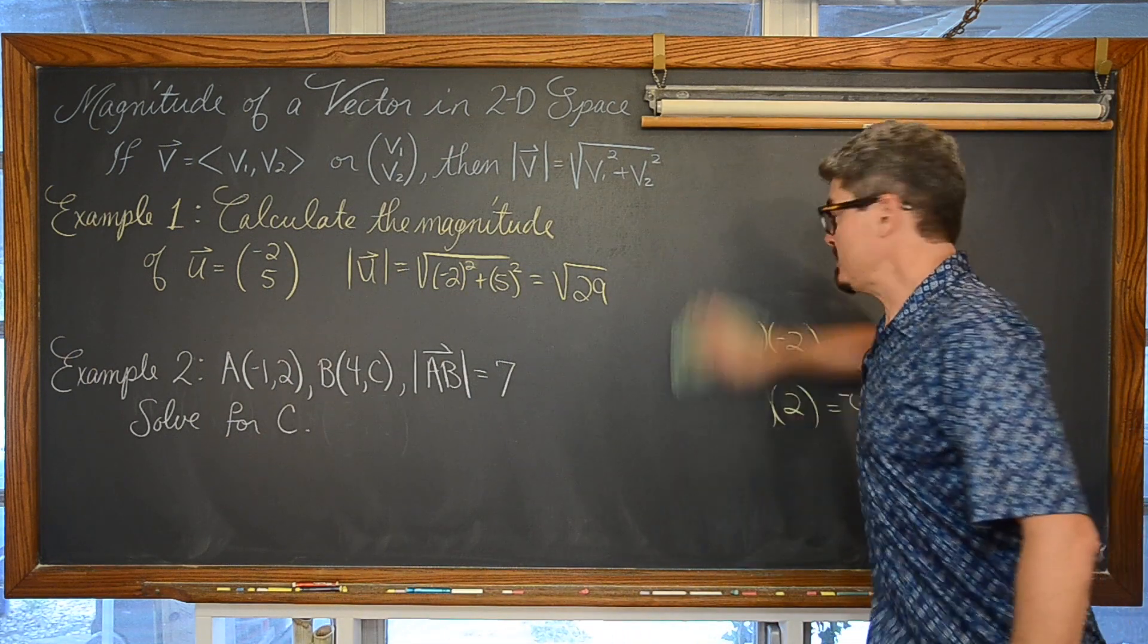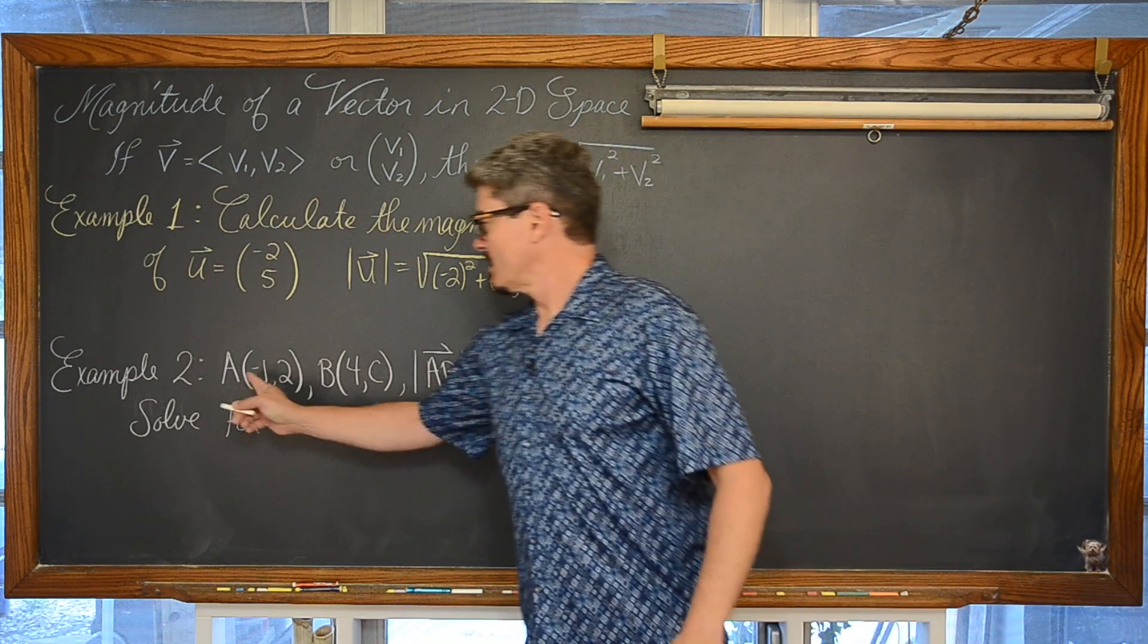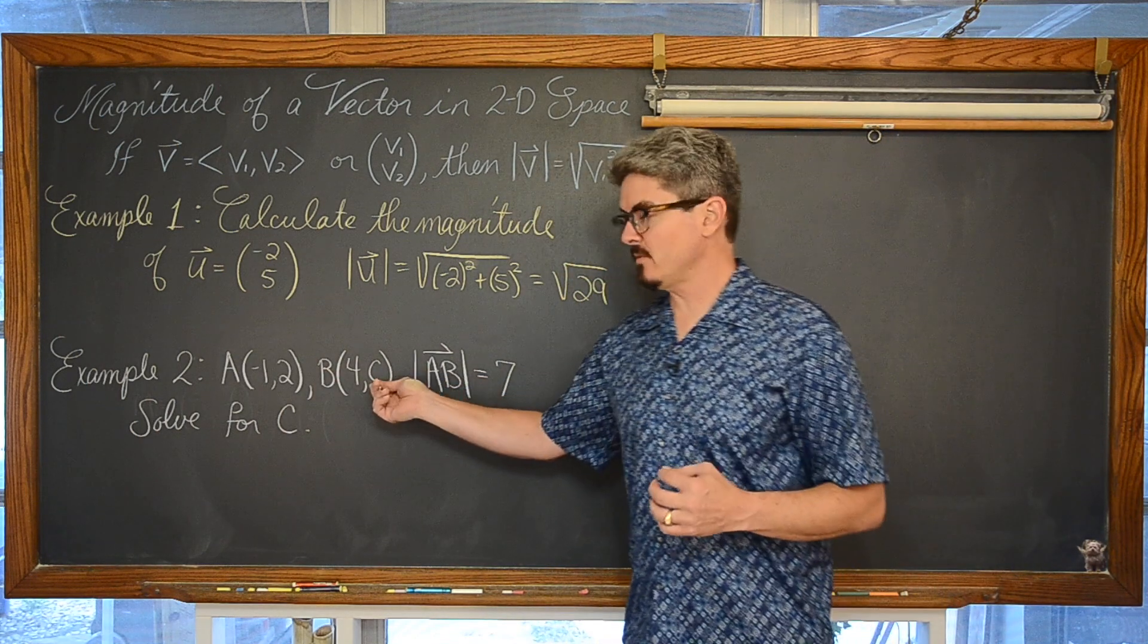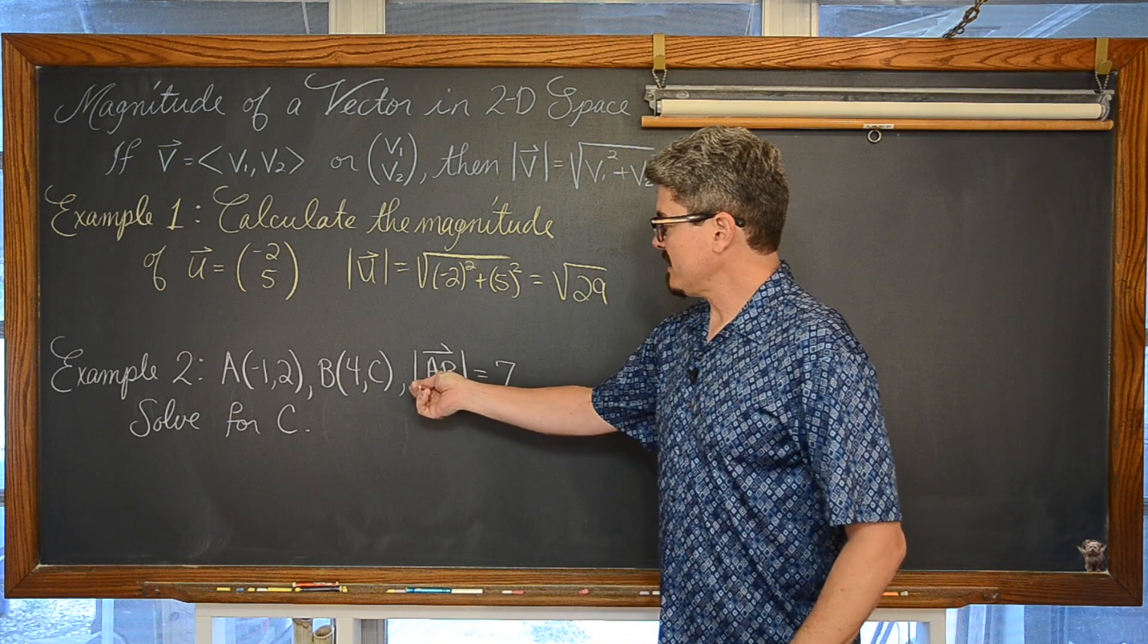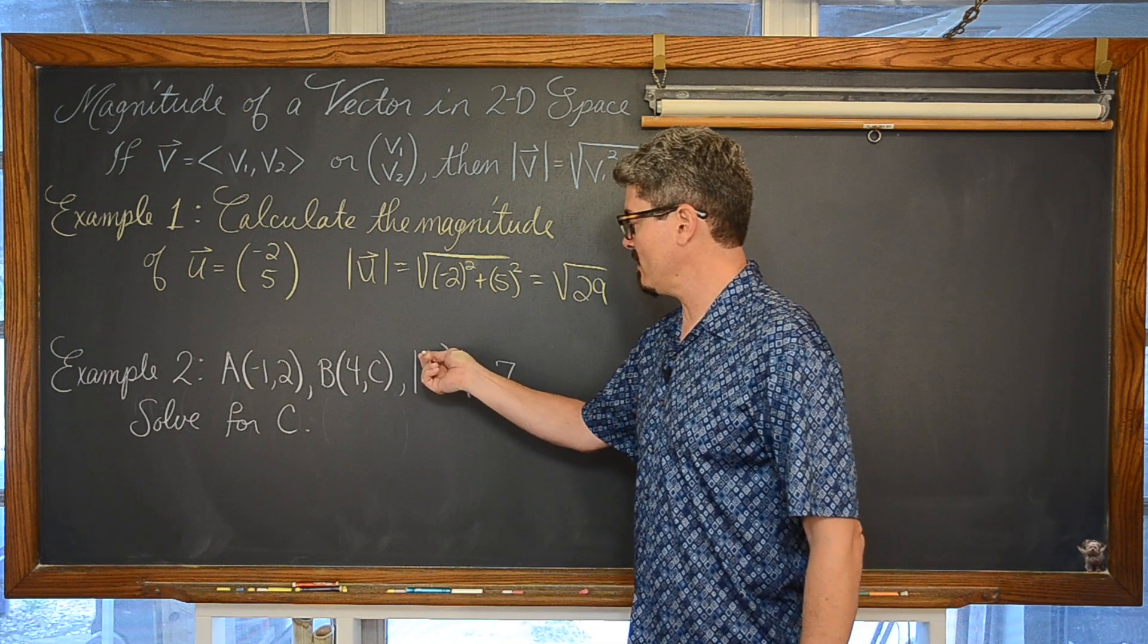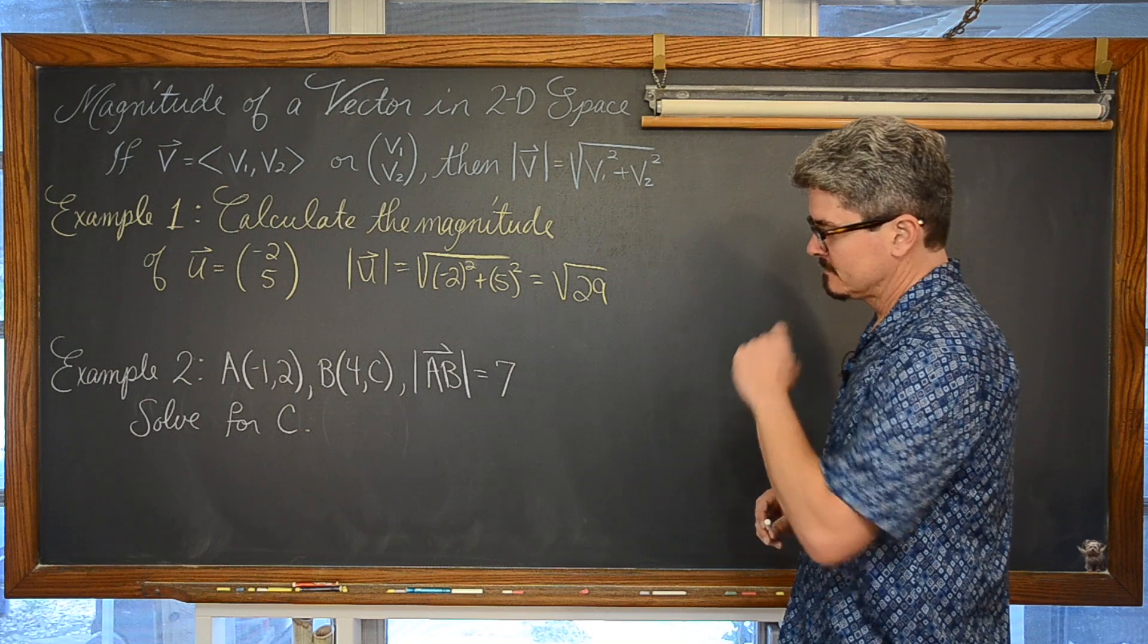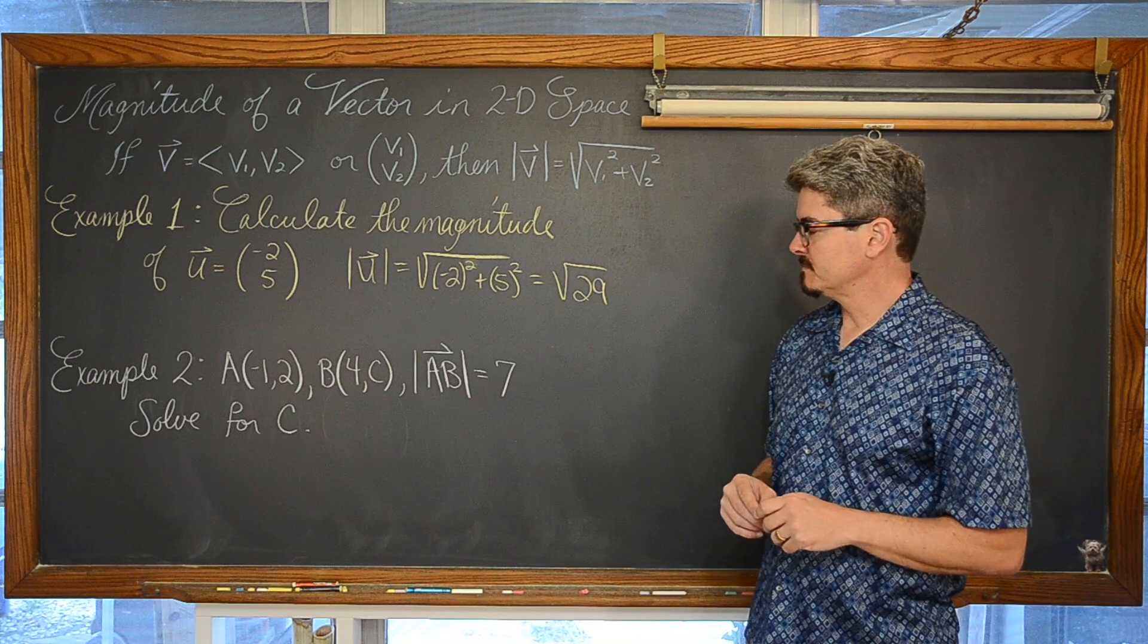Now something a little bit more interesting. We have got here, point A is negative 1, 2. Point B is 4, and we don't know the vertical component, or the y coordinate of that point. And the magnitude of vector AB, so with this notation one more time, arrow starting above the A, this is going to be our initial point, this is our terminal point, that magnitude is going to be equal to 7. What values of C do we have? Ok.